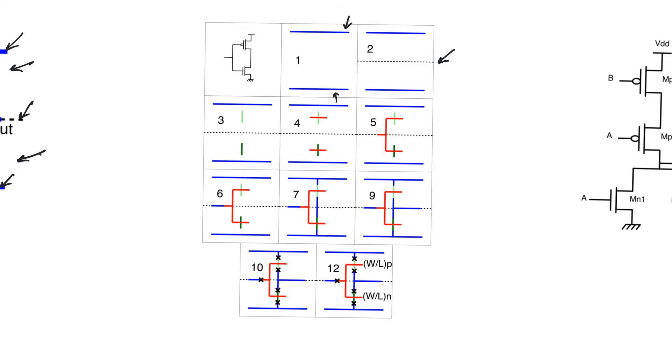Step number three, we will draw p plus and n plus diffusion lines wherever there are transistors. We can initially at least place them wherever the transistors are in the schematic, and we will use one diffusion line per transistor and they will be vertical. In step number four, we will draw polysilicon lines horizontally across each diffusion line that was drawn to be a transistor. This will create the transistor.